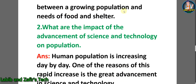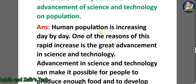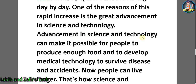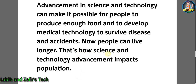Number two: what are the impacts of the advancement of science and technology on population? Answer: human population is increasing day by day. One of the reasons for this rapid increase is the great advancement in science and technology. Advancement in science and technology can make it possible for people to produce enough food and to develop medical technology to survive disease and accidents. Now people can live longer — that's how science and technology advancement impacts population.